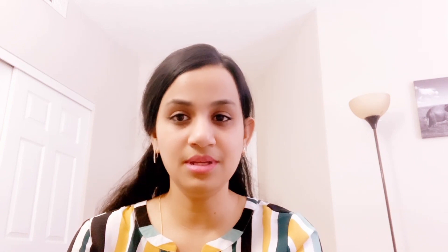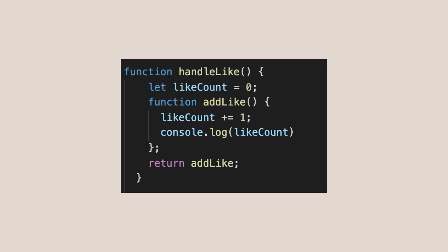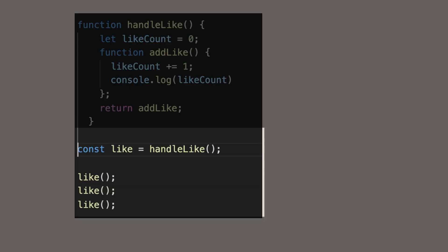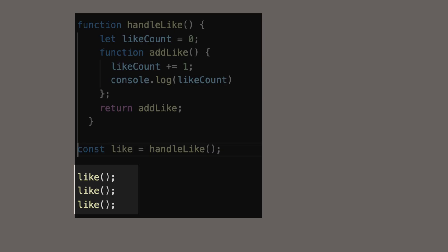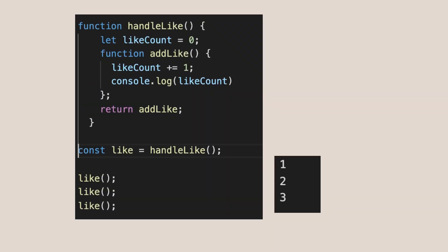This is where closure comes in. I've declared the variable in the same function and put the incrementing logic inside a function called add like, then returned that function. Now I assign this to a like variable, and every time I call the like function it increments by 1. So the output is going to be 1, 2, and 3.